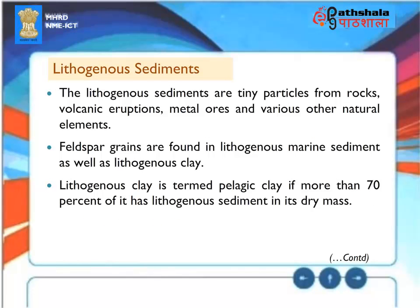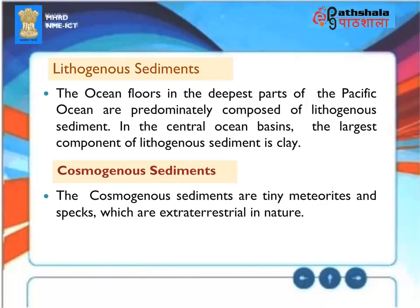Lithogenous Sediments: Lithogenous sediments are tiny particles from rocks, volcanic eruptions, metal ores, and various other natural elements. Feldspar grains and lithogenous clay are found in lithogenous marine sediment. Lithogenous clay is termed pelagic clay if more than 70% of it has lithogenous sediment in its dry mass. The ocean floors in the deepest parts of the Pacific Ocean are predominantly composed of lithogenous sediment, with clay being the largest component in the central ocean basins.